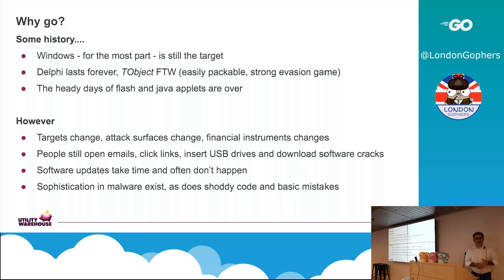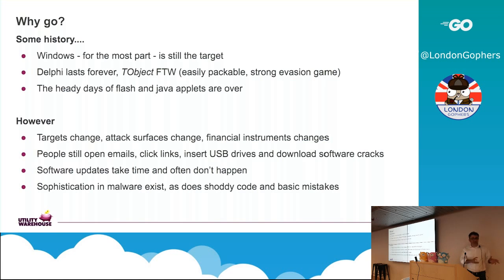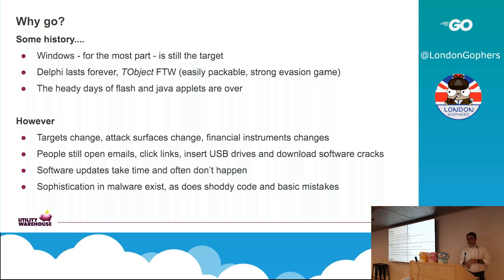History of malware, rapidly: Windows, for the most part, is still the target. There's a growing body of research around macOS and Linux malware, but actually still nothing hugely interesting — the vast majority is PUPs, effectively adware-type stuff, although adware runs a spectrum from particularly grungy through to stuff that just wants to show you adverts. Delphi is still quite widely used in the malware world: very easily packable, small executable, good at evasion. The kind of Flash and Java applets have tended to disappear.